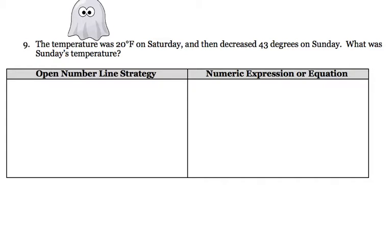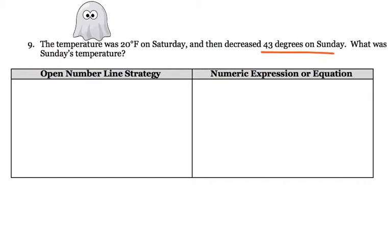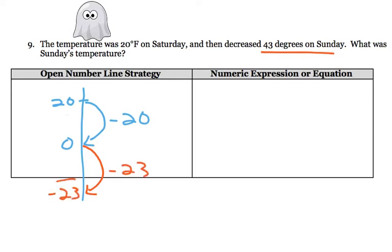Alright. The temperature was 20 degrees Fahrenheit on Saturday, and then decreased 43 degrees on Sunday. This kind of brings us back to decrease. It has the D in it, which means that it's going down. So, we're going to start at 20 degrees Fahrenheit, and we're going to go down. I'm going to go down to 0 first, which gets us to down 20. And then I know that we have 23 left to go down, which gets us to negative 23.